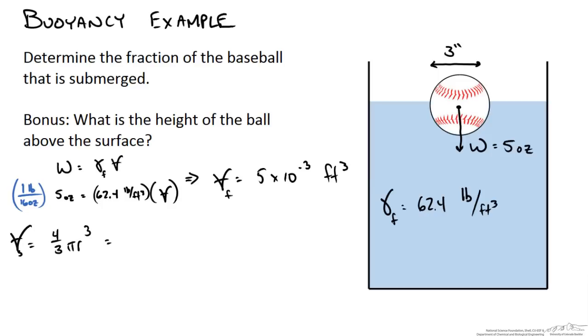So if we plug in values and convert it so that we have it in feet, since this is reported in feet cubed, we can solve the volume of a baseball as 8.18 times 10 to the minus 3 feet cubed.